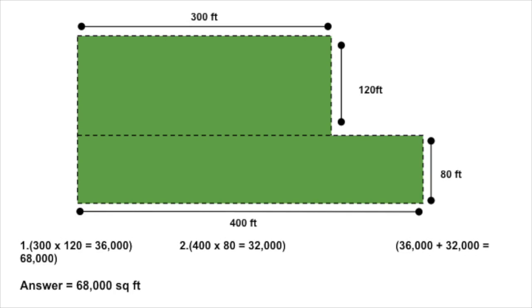I should mention that you could have drawn the line on this diagram horizontally to split it into two longer rectangles of completely different sizes and shapes — you would have calculated the exact same result though. The two rectangles in that case would have been 300 feet by 120 feet, which comes to 36,000 square feet, and 80 feet by 400 feet, which comes to 32,000 square feet. Add those two numbers together and you also get 68,000 square feet, just as you found before.